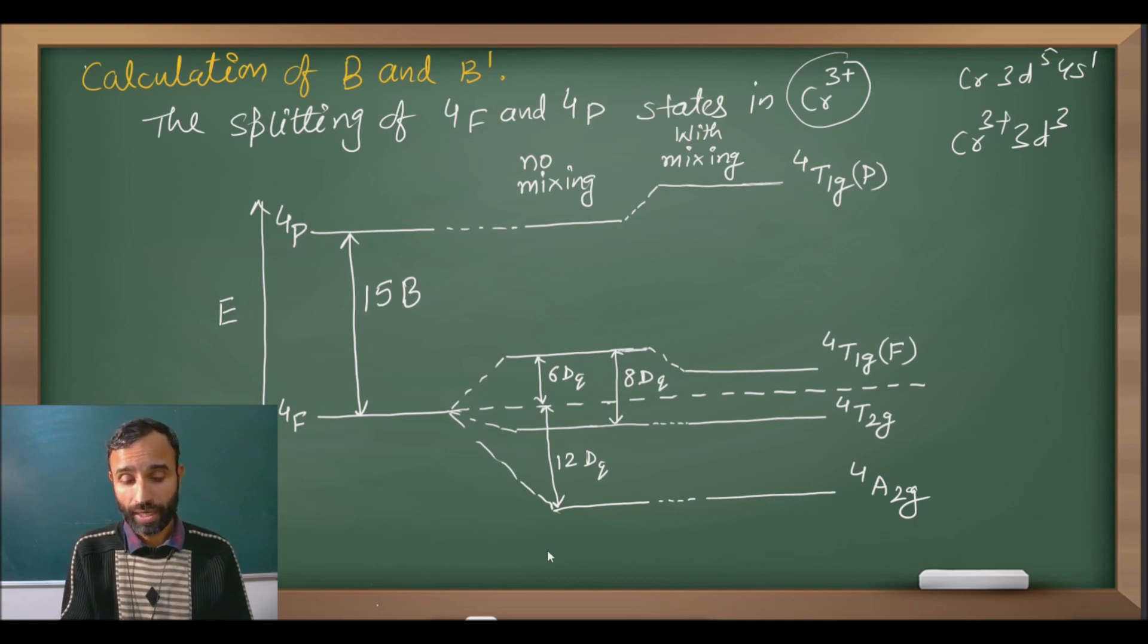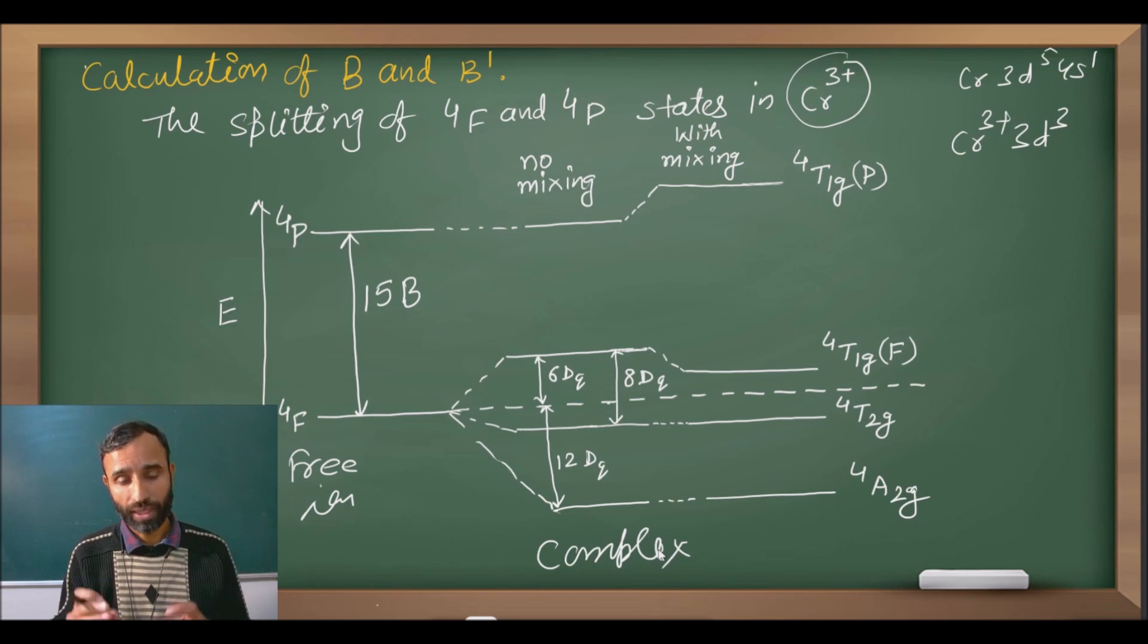Now when complex is formed, this is for free metal ion, right? For free ion. Now when complex is formed and if there is no mixing, these T1g states which are nearby should interact. If we think there is no interaction between them, there is no mixing, then 4F states split into A2g, T2g and T1g.